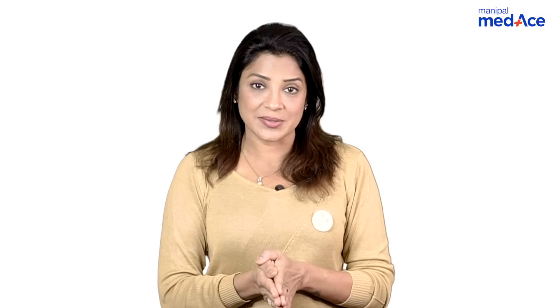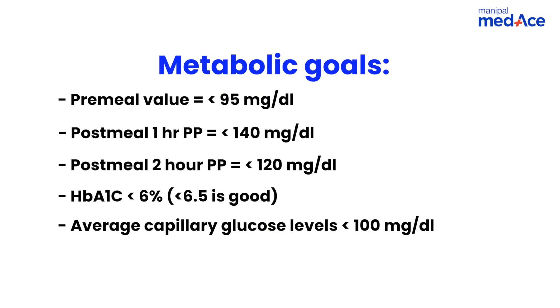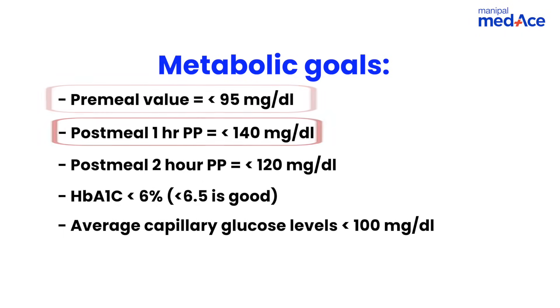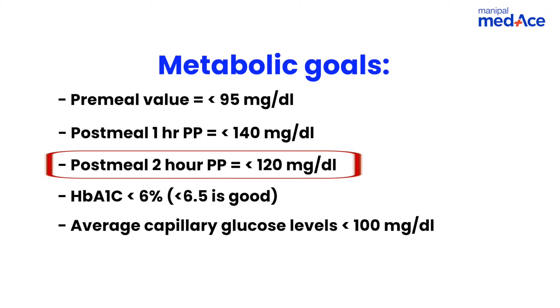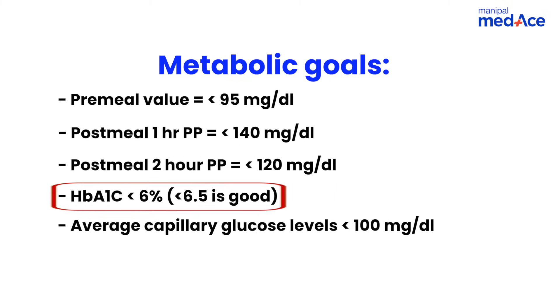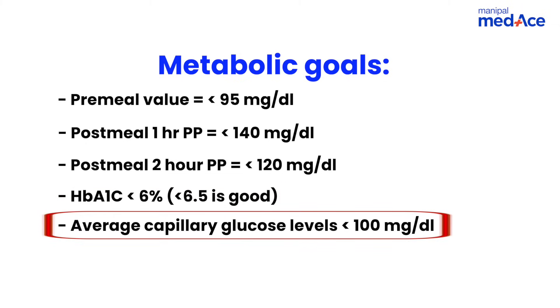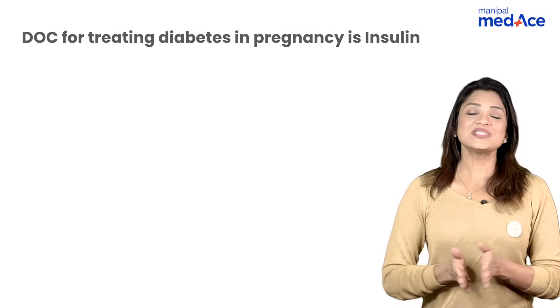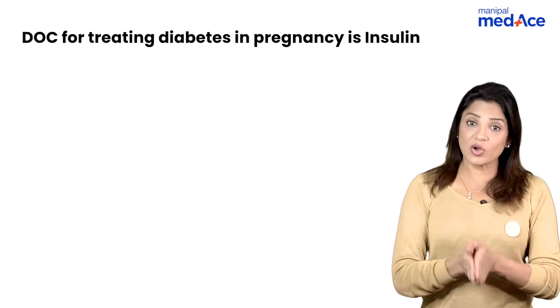An important question: what are the metabolic goals in a patient with diabetes in pregnancy? As you can see on the chart, the pre-meal fasting value should be less than 95. Post-meal 1-hour PPG should be 140 or less. Post-meal 2-hour PPG should be 120 or less. HbA1c should preferably be less than 6%, though 6.5% and below is acceptable. Average capillary glucose — random sugar — should not be more than 100 mg%.